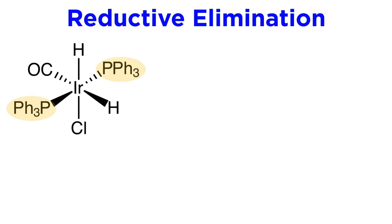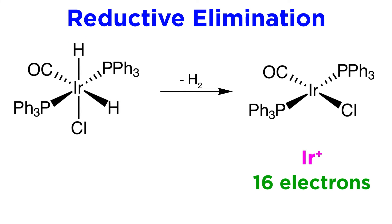Here is an iridium complex with two triphenylphosphines, two hydrides, a chlorine, and a carbonyl. The metal is 3+, and the electron count is 18. These two hydrides are cis to one another, and can therefore eliminate to form H2. So the resulting complex will have a 1 plus charge, and an electron count of 16.